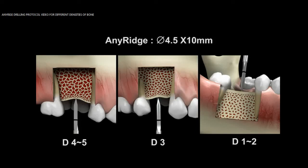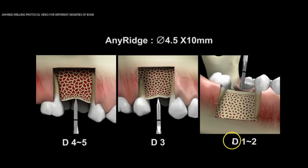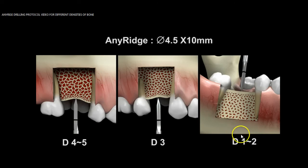Hi, this is Joel again, and I'm going to be making another short video here relative to the IneRidge drilling protocol in different densities of bone. The reason I wanted to start off with this slide right here is because you can clearly see, when we're talking about D1, D2, D3, and D4, we're specifically talking about different types of bone.